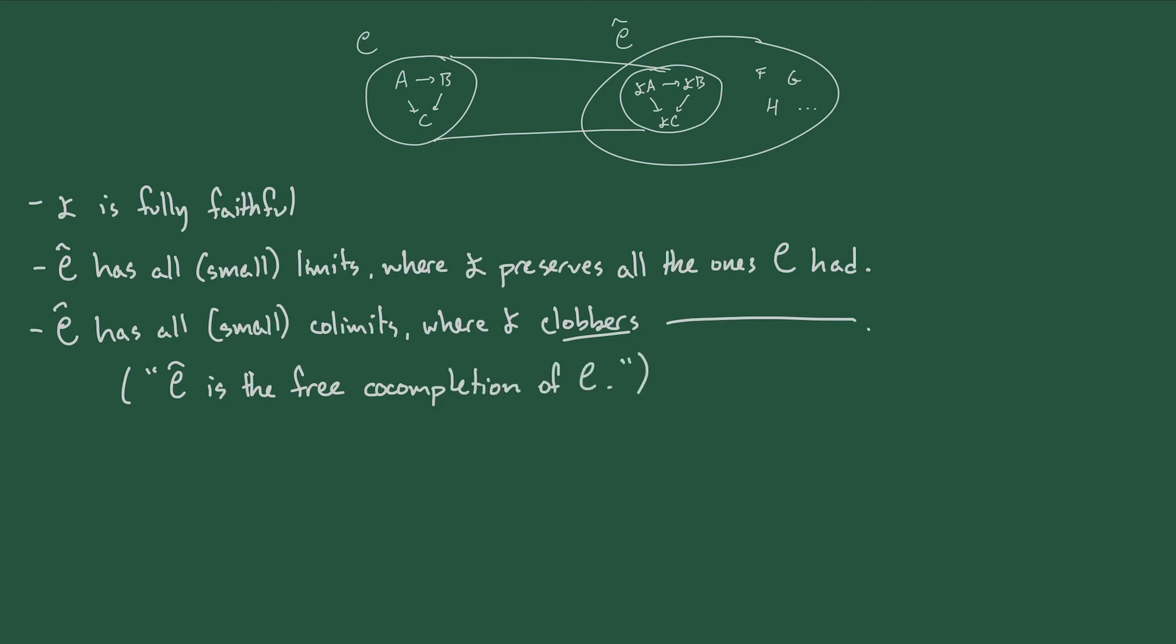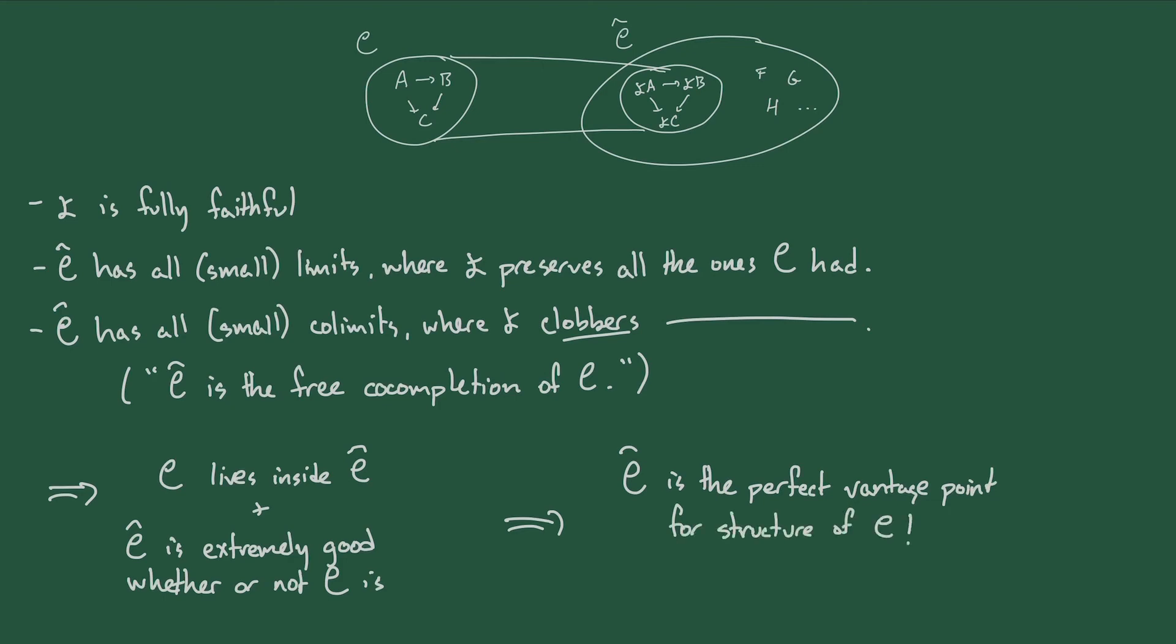And I'll explain what that means in a future video. But in essence, it tells us the category of presheaves is exactly the category of small colimits of representable functors. And that's known as the co-Yoneda lemma for reasons that I can never remember. Now I know this has gotten a lot more abstract, but the upshot of all of this is, well, two things. First of all, C lives inside C hat. So any question we have about C can be answered by looking at C hat in just a purely formal sense. And these last two properties say that C hat is extremely well-behaved whether or not C is. C hat always has all small limits and small colimits. So it turns out that C hat is really the perfect place to analyze C. It's like a better version of C that still remembers where it came from.